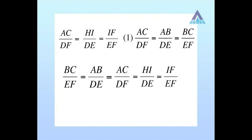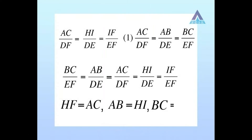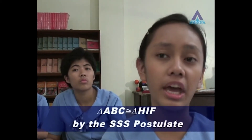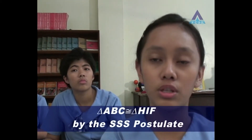So we have the following equalities of corresponding parts of triangles ABC and HIF: HF equals AC, AB equals HI, and BC equals IF. These simply prove the congruence of triangles ABC and HIF by the SSS congruence postulate.